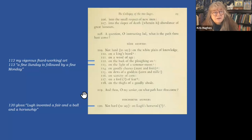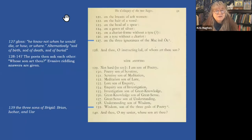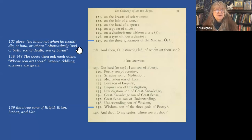And thou, my senior, on what path hast thou come? 'Not hard to say: on Lugh's horse-rod' — apparently there was a saying that Lugh invented a fair and a ball game, and a horse-whip. 'On the breasts of soft women, on the hair of a wood, on the head of a spear, on a gown of silver, on a chariot frame without a tire, on a tire without a chariot' — it's like Taliesin. 'On the three ignorances of the Mac-an-dog' — either he knows not when, how, or where he would die; or the three unknown places: a sod of birth, a sod of death, and a sod of burial — the places you don't know: where you will be born, where you will die, or where you will be buried.